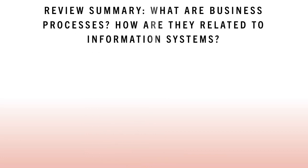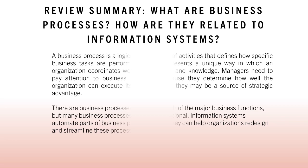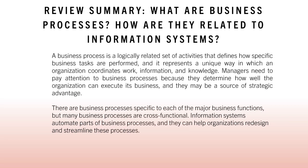Review summary: What are business processes and how are they related to information systems? A business process is a logically related set of activities that defines how specific business tasks are performed, and it represents a unique way in which an organization coordinates work, information, and knowledge. Managers need to pay attention to business processes because they determine how well the organization can execute its business, and they may be a source of strategic advantage. There are business processes specific to each of the major business functions, but many business processes are cross-functional. Information systems automate parts of business processes, and they can help organizations redesign and streamline these processes.